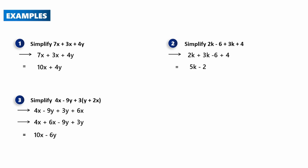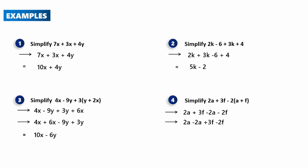Question 4: Simplify 2a + 3f − 2(a + f). We deal with the brackets first — negative 2 multiplies everything inside: −2 × a = −2a and −2 × f = −2f. Expanding gives 2a + 3f − 2a − 2f. Grouping like terms: 2a − 2a = 0, and 3f − 2f = f. So the final answer is just f.